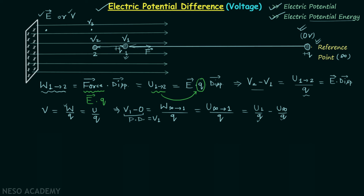Electric potential is independent of the charge you are moving — it depends only on the position. Each point in the electric field has some potential that does not depend on the charge placed there. However, electric potential energy does depend on the charge. For example, placing a 2 coulomb charge at position 3 gives electric potential energy equal to 2 coulombs multiplied by potential V3.